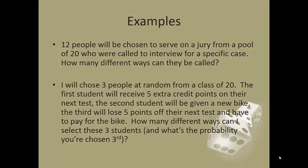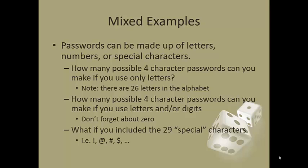So some examples. I've got 12 people chosen to serve on a jury from a pool of 20. How many different ways can they be called? Well here I don't care about order. If I'm juror number 5 or juror number 7, I'm still on jury duty so it doesn't really matter. So this is going to be a combination, 20C12. If I choose 3 people at random from a class of 20, the first student will receive 5 extra credit points on the next test, the second student will be given a new bike, and the third will lose 5 points off their next test and have to pay for a new bike. You care whether you're chosen first or third, very different experience. So here I have a permutation. I care about order.